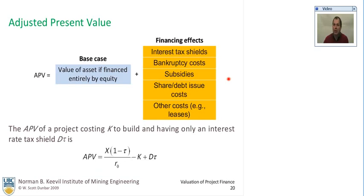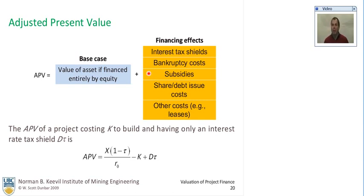There's yet another technique called the adjusted present value. It starts off with a base case — the value of the asset if it's financed entirely by equity — and then you add on financing effects. There are a variety of them: there could be interest tax shields, which is the one we're most interested in, but there could also be bankruptcy costs, subsidies — that was of interest when I was in Nigeria with a barium sulfate or barite project — and also interest tax shields, shared debt issue costs, and other costs such as leases.